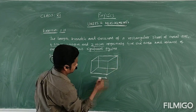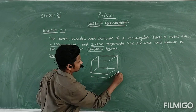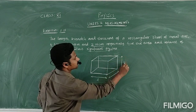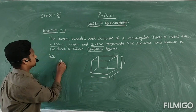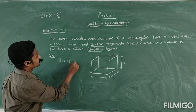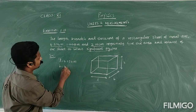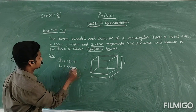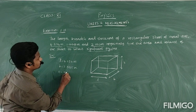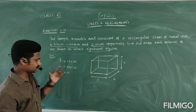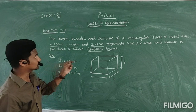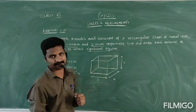So the length value is given as 4.234 meter. The breadth value is 1.005 meter. Then the thickness — because they mentioned thickness — that is 2.01 centimeter, so I can write it in meter as 2.01 × 10⁻² meter.